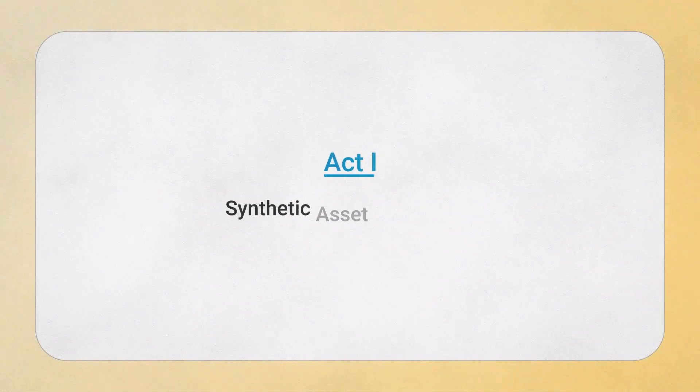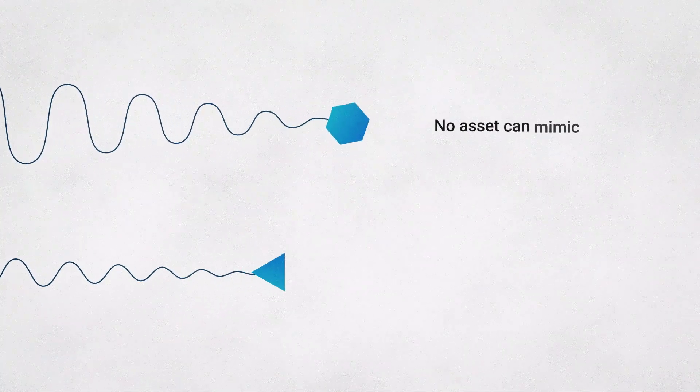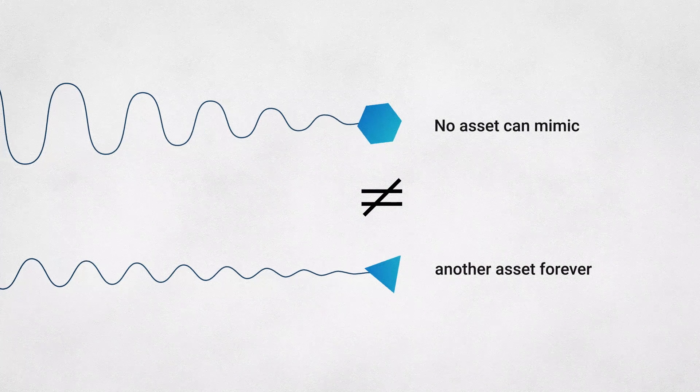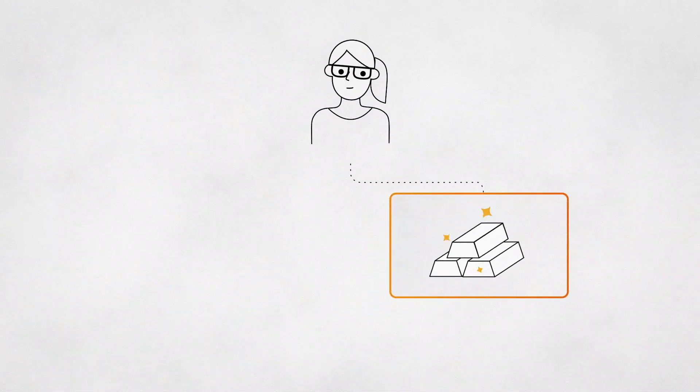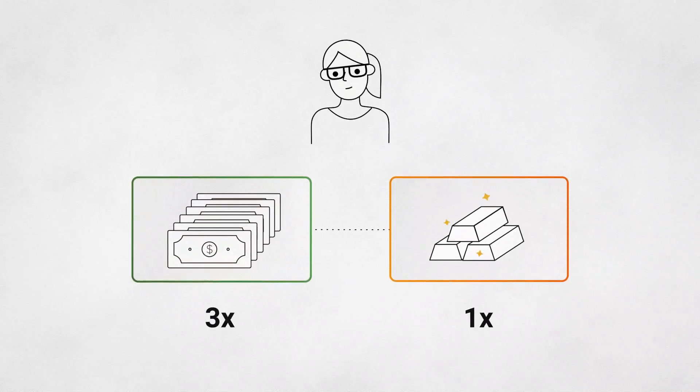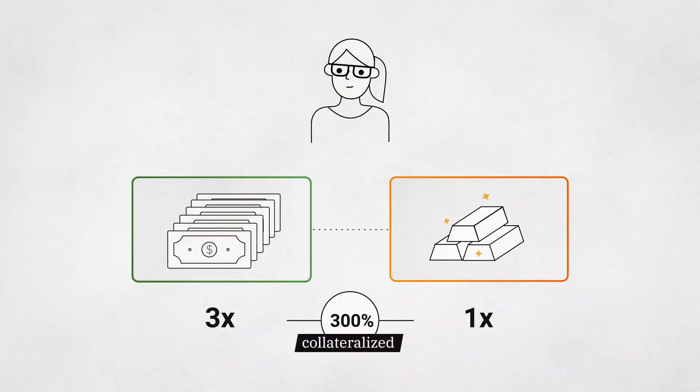Act 1. Synthetic Asset Limitations. No asset can be used to synthetically mimic the behavior of a different asset forever. Imagine Alice is trying to produce 100 ounces of synthetic gold using dollars as collateral. She begins with three times the value of the gold in dollars, which means that she has an account that is 300% collateralized.